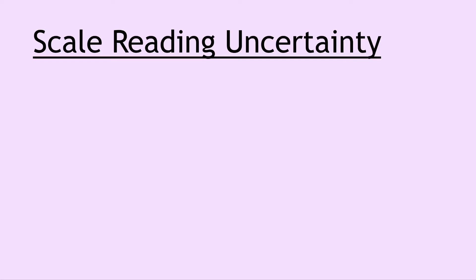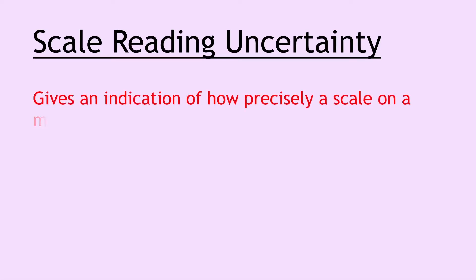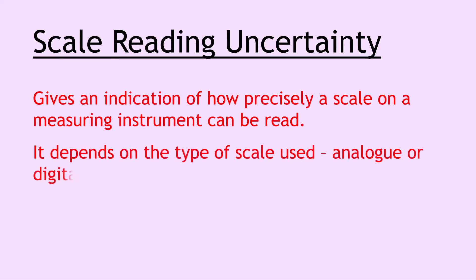Our first definition is scale reading uncertainty, and this gives an indication of how precisely a scale on a measuring instrument can be read. It depends on the type of scale used, for example whether it's analogue or digital. Analogue scales have a scale reading uncertainty of plus or minus half of the smallest scale division, whereas digital scales have a scale reading uncertainty of plus or minus one of the least significant digit.